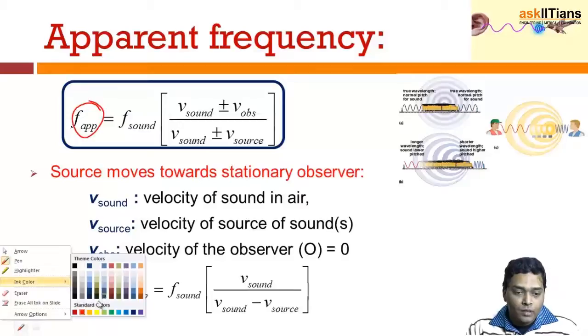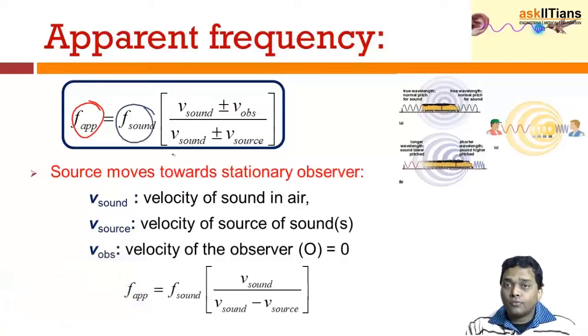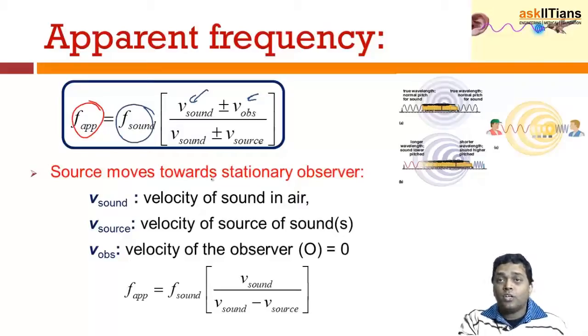If I say that the original frequency of the sound was this, V is the velocity of sound. The velocity of sound in air or the medium. And V observer is the velocity of the observer, velocity of the observer with respect to the velocity of sound, either towards the sound or away from the sound.